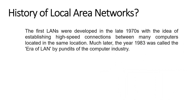Technologies used in LAN construction in the past include Arcnet and Token Ring, but currently Ethernet over Twisted Pair and Wi-Fi are the two most common technologies used to build LANs. Currently, data can be exchanged between LANs at speeds of 10, 100, or 1000 MB per second — and 1000 MB is also known as 1 GB.